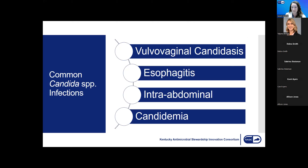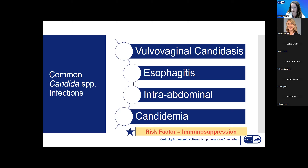This presentation isn't going to be all-encompassing, but I did want to review some of the Candida species infections we commonly see in both the inpatient and outpatient environment. Our heavy hitters are going to be vulvovaginal candidiasis (VVC), esophagitis, intra-abdominal infections, and candidemia, which is growth of Candida from the bloodstream. Before we go any further, we have to acknowledge that immunosuppression is a risk factor. Candida is not particularly virulent; we usually coexist in perfect harmony. However, if the immune system is not working well, Candida may start to have some overgrowth and a risk for infection.